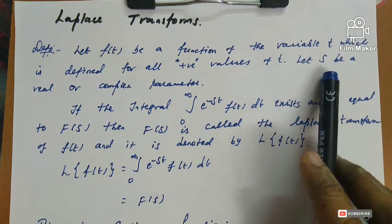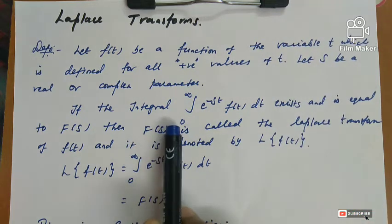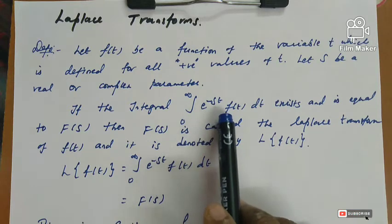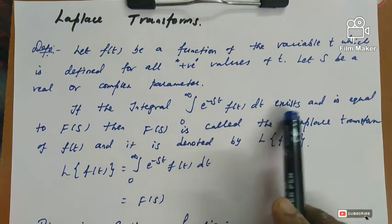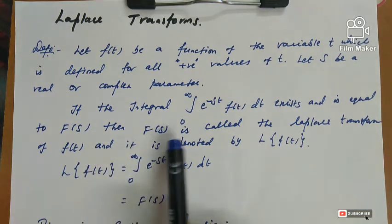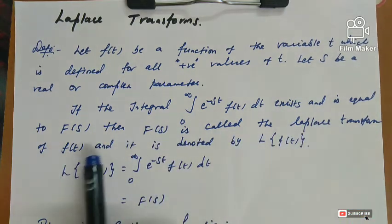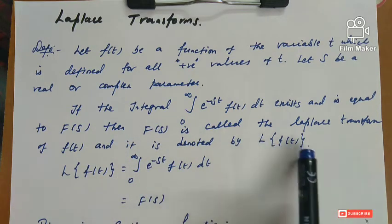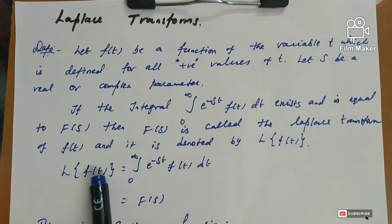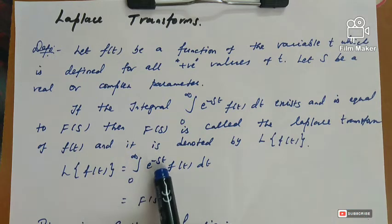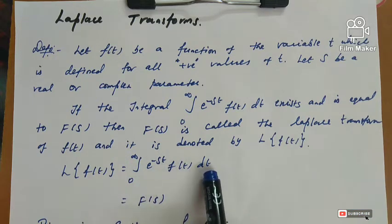If the integral from 0 to infinity of e power minus s t times f of t dt exists and is equal to capital F of s, then F of s is called the Laplace transform of f of t, and it is denoted by L of f of t. That is, L of f of t is equal to the integral from 0 to infinity of e power minus s t times f of t dt.